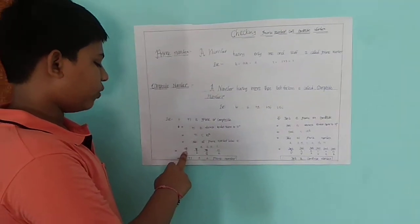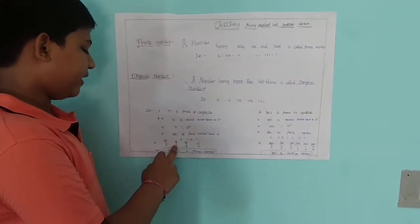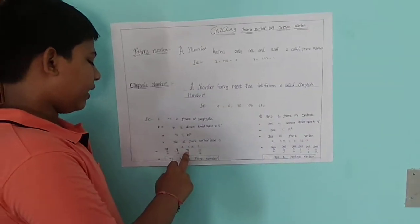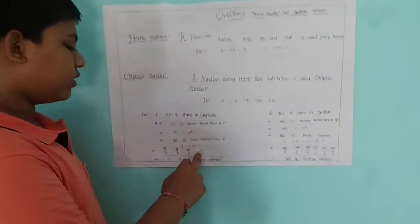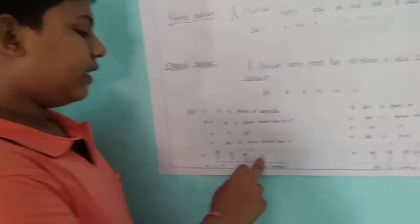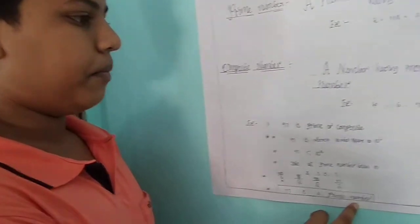97 divided by 2 is not divisible by 2. 97 divided by 3 is not divisible by 3. 97 divided by 5 is not divisible by 5. 97 divided by 7 is not divisible by 7. That's why 97 is a prime number.